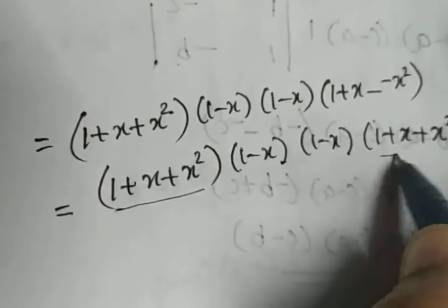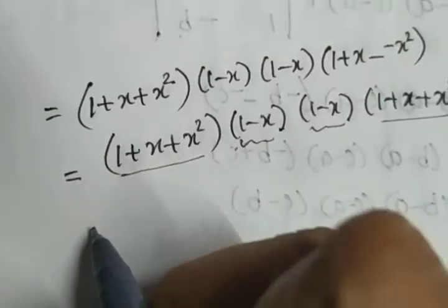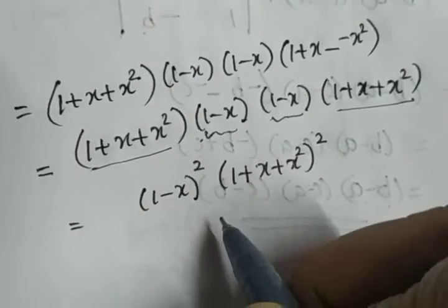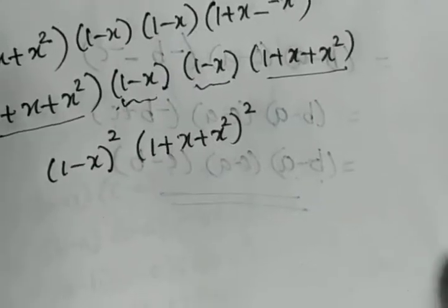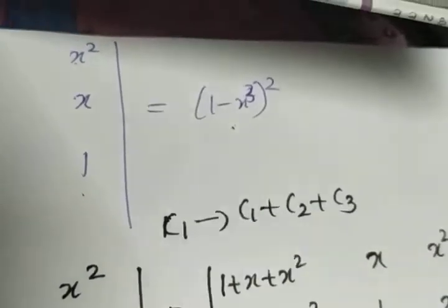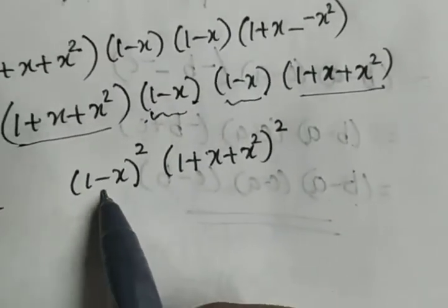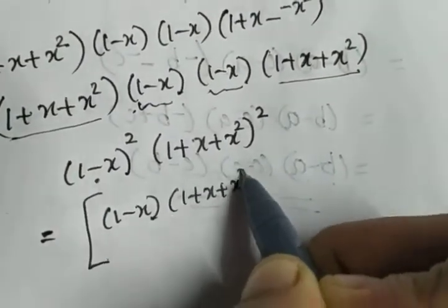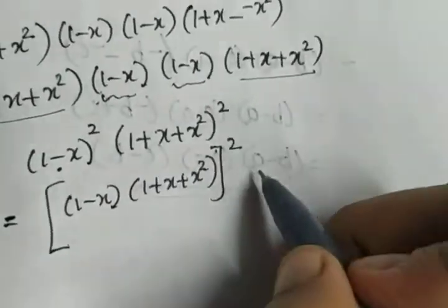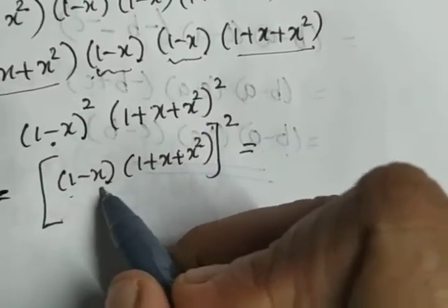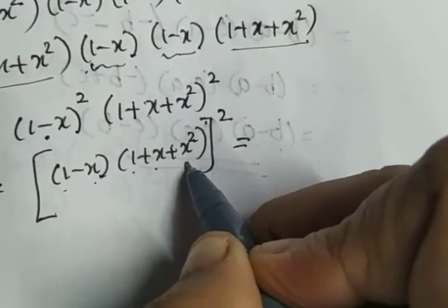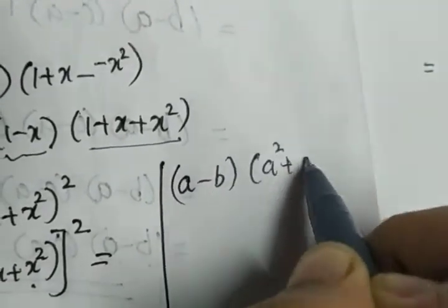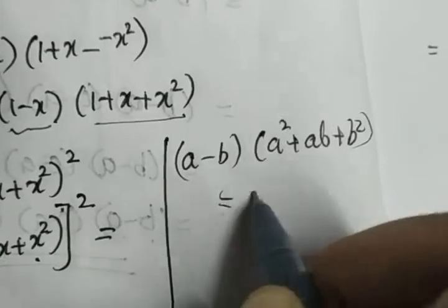We can see there are two factors of (1 - x) and two factors of (1 + x + x²), so we can write this as (1 - x)² · (1 + x + x²)². This could be the answer if the question was to evaluate, but we need to prove RHS = (1 - x³)². We can write it as [(1 - x)(1 + x + x²)]². Using the algebraic identity a³ - b³ = (a - b)(a² + ab + b²), we recognize this form.